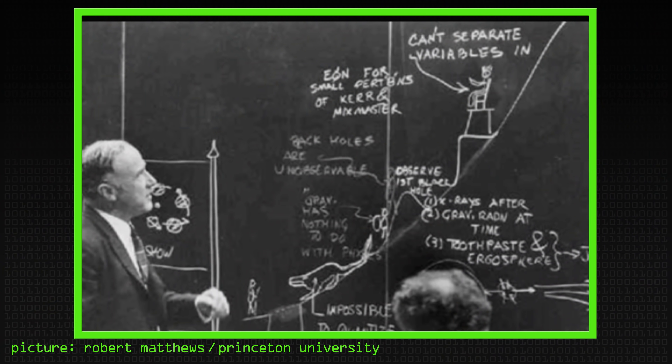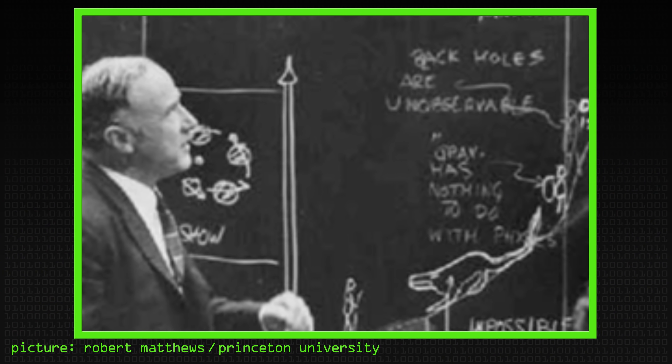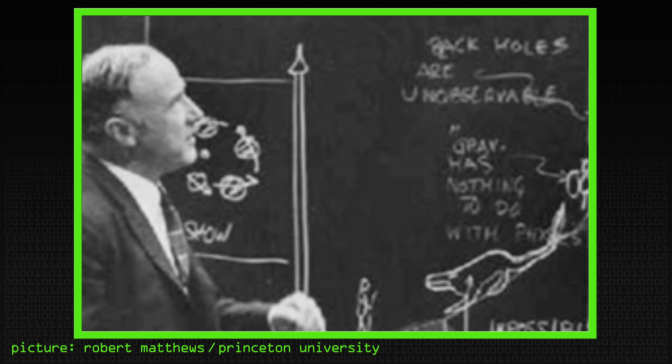Before we start thinking about limits, we've got to start thinking about: well, physically, what do computers do? What do they actually do? They take information in, they do some computation, and they give information out. The interesting thing is just how you define information. There's a guy called Wheeler — who was the PhD supervisor of Feynman — and Wheeler had this very famous phrase: "it from bit." The idea that the fundamental quantity in the universe is not energy, it's not matter, it's information.